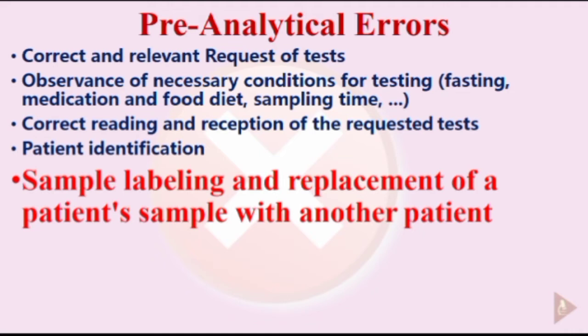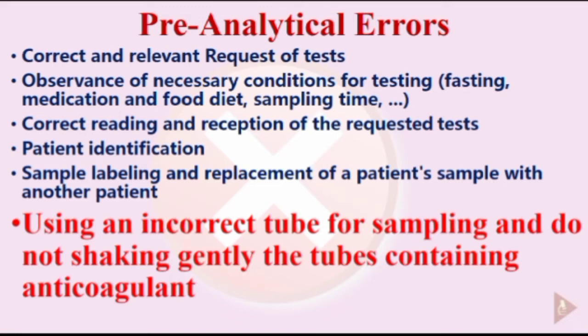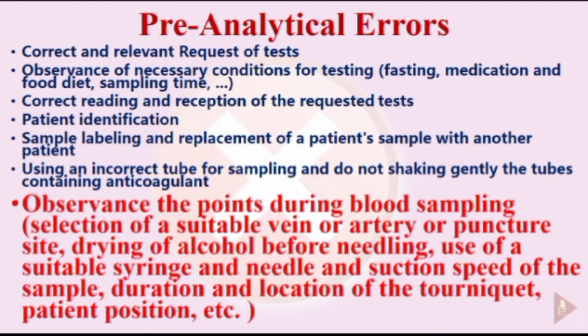The proper tube should be used for sampling, and anticoagulant-containing tubes should be shaken gently to prevent clotting and hemolysis. Key points during blood sampling include selection of a suitable vein, artery, or puncture site.